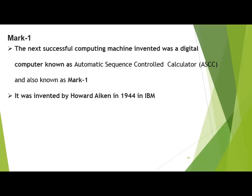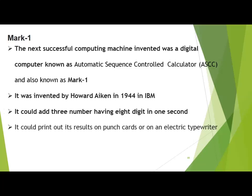Mark I was invented by Howard Aiken in 1944 at IBM. This machine was established by IBM - as I told you, Dr. Hollerith was the founder of IBM. This company basically established mainframe computers in the world and they are pioneers in mainframe. It could add numbers having eight digits in one second, and it could print out its results on punch cards or an electric typewriter.